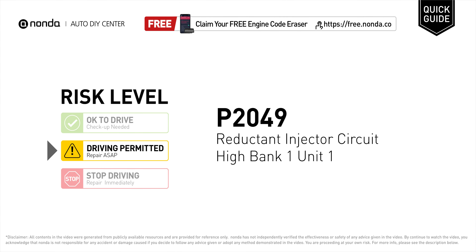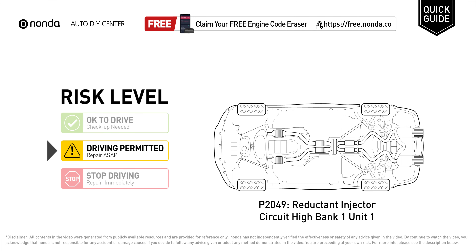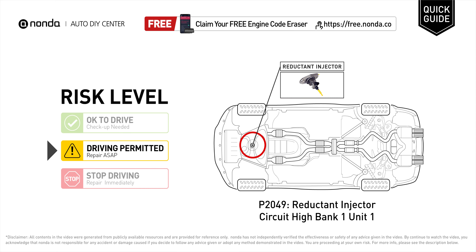P2049 is a diagnostic trouble code for reductant injector circuit high on bank 1 unit 1. Under this circumstance, short distance driving is permitted, but your vehicle should be repaired ASAP. It means that the reductant injector circuit located on bank 1 unit 1 of the exhaust has a high circuit.